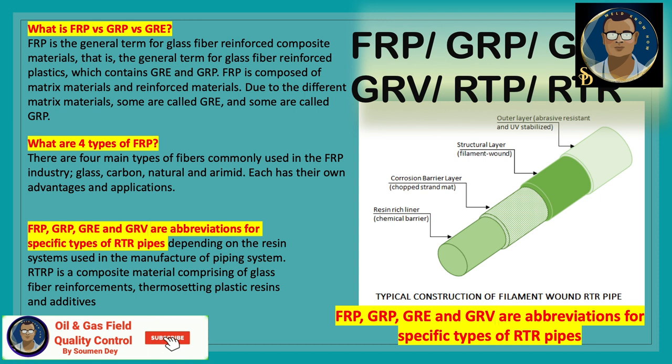Let us check some specific terms that may be unfamiliar. What is FRP versus GRP versus GRE? FRP is the general term for glass fiber reinforced composite materials — the general term for glass fiber reinforced plastics — which contains both GRE and GRP. FRP is composed of matrix materials and reinforcement material. Due to different matrix materials, some are called GRE and some are called GRP.